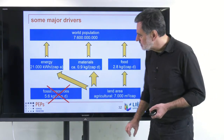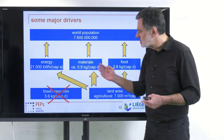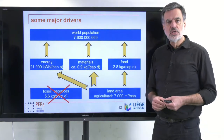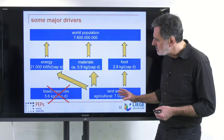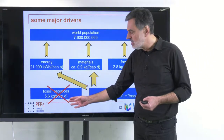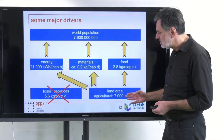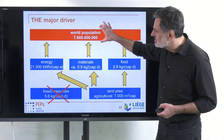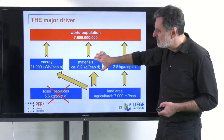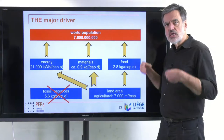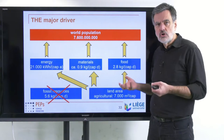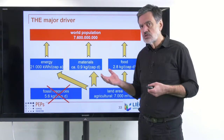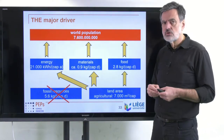In the near future — the next few decades — we want to get rid of fossil resources and replace them by land area. So we want to produce energy as well as materials solely from land area: solar energy, wind energy, and so on — not necessarily only agricultural area, but also deserts. This shows that the single major driver is world population, because world population times per capita demands for energy, materials, and food gives the overall consumptions and requirements we have. It also scales the waste we produce, including the CO2 we emit into the atmosphere, which leads to climate change.